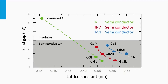Let's consider the II-VI materials based on cadmium, like cadmium sulfide, cadmium selenide, and cadmium telluride. Again, the larger the lattice constant of the material, the smaller the band gap will be. Cadmium telluride has the largest lattice constant and therefore the smallest band gap.